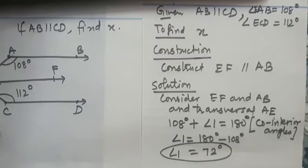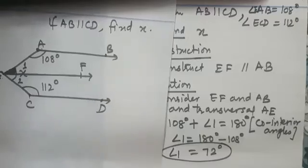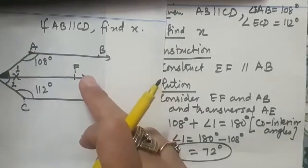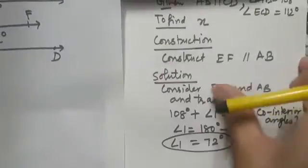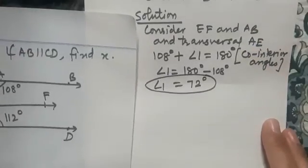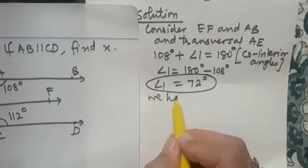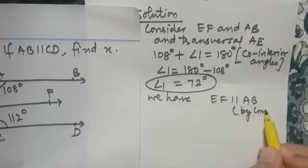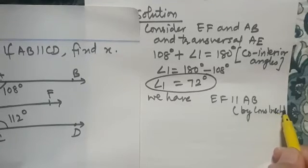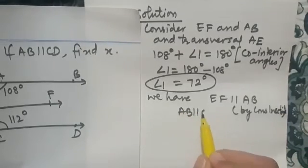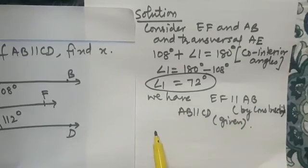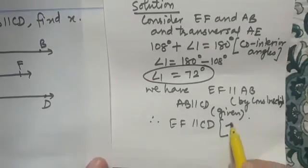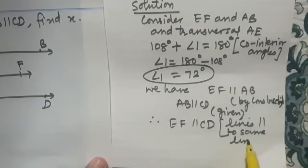For the second part: AB is parallel to CD and we constructed EF parallel to AB, so EF is also parallel to CD. Write it formally: EF is parallel to AB (by construction), and AB is parallel to CD (given). Therefore EF is parallel to CD, because lines parallel to the same line are parallel to each other.